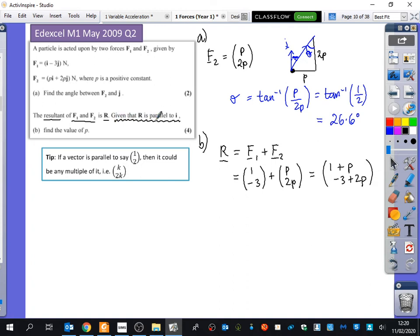Now, the squiggly bit that I've written, that R is parallel to I, how do we show if two vectors are parallel to each other? Scale factor. There's a scale factor. So we know, because R is parallel to I, we know that R must be some scale factor of, what's the I vector in column form? (1, 0). So we know that R must be (1, 0) multiplied by K, because it's some multiple. It's not exactly equal to I, but it's some multiple of it. And that's what I've put inside this blue box here. If a vector is parallel to (1, 2), then it could be any multiple of it. It could have been (K, 2K).